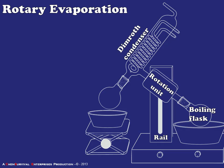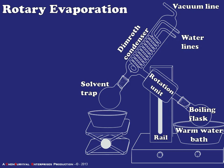There's a Dimroth condenser, which refers to that spiral condenser inside the glassware. That spiral cooling column creates a really large amount of cold surface area, making it a very efficient condenser — and we need that for rotary evaporation to work. There's always a port for attaching a vacuum line and ports for water lines to cool the condenser. What would be the receiving flask in a distillation is here referred to as the solvent trap, implying we're catching the solvent away from the residual non-volatile material in the boiling flask. There's a warm water bath to encourage evaporation in the boiling flask, an ice bath to discourage evaporation once solvent has begun accumulating in the trap, and controls for rotation and temperature.